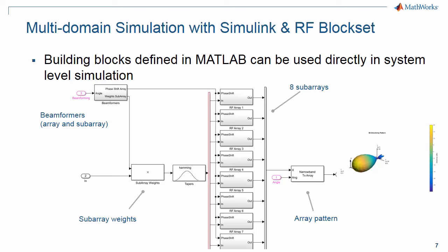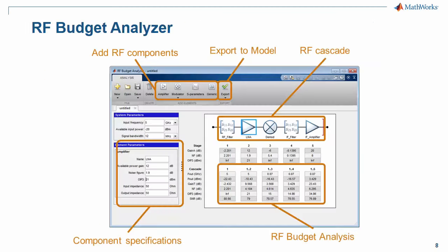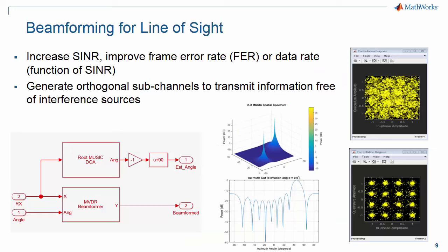Simulink allows you to do this along with the RF block set. These building blocks that were defined in MATLAB are used directly in the system level simulation. You can see here we have the beamformer, with the weights applied, and feeding each of these subarrays which have the phase shifters in them. We can build up our arrays in MATLAB and export the results to Simulink. In this figure you see the RF budget analyzer which allows us to build up a string in the RF domain. And for each of the components that we use to build up our system, we're able to specify the specific parameters that go with each of those components.